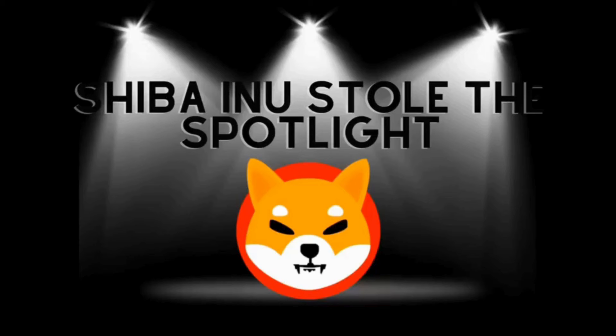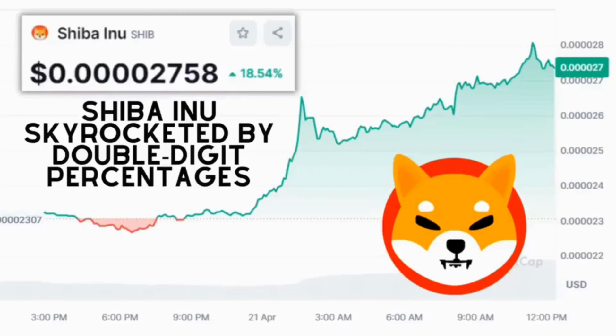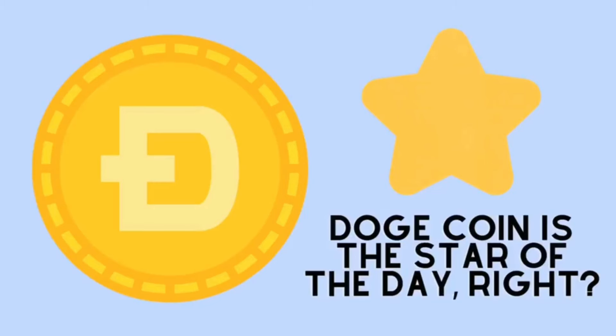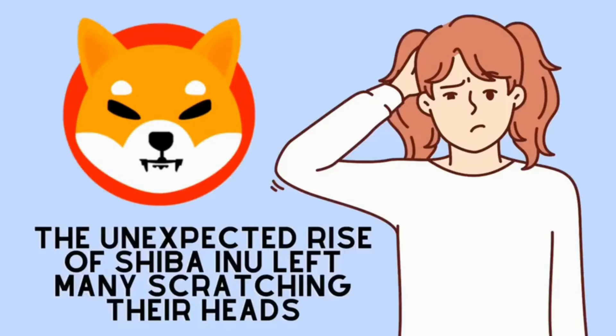But here's what's really interesting. On Doge Day, Shiba Inu stole the spotlight. While Dogecoin saw only a modest increase in its price, Shiba Inu skyrocketed by double-digit percentages. That's a huge leap. At first glance, this might seem surprising. After all, Dogecoin is the star of the day, right? But the unexpected rise of Shiba Inu left many scratching their heads.